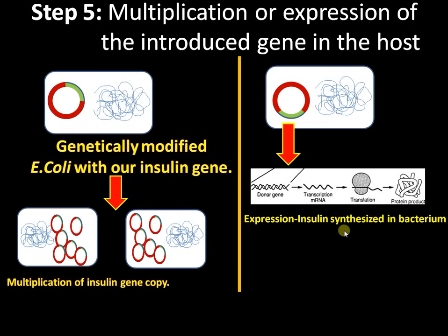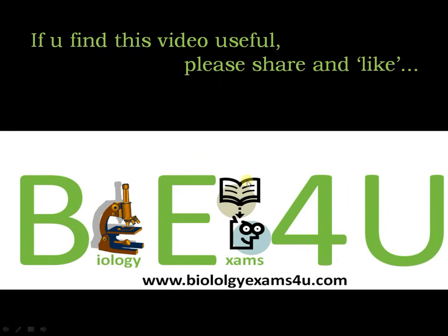Insulin synthesized by recombinant DNA technology is called Humulin. Here we are making bacteria act as bio-factories for synthesizing human insulin. We need to culture these bacteria at large scale for large-scale production of insulin. Hope everything is clear. If you have any questions, comments, or suggestions, we are happy to hear from you at biology exams for you.com. If you find this video useful, please share and like. Thank you so much for watching.